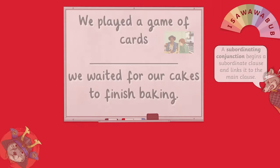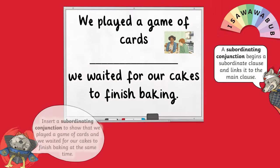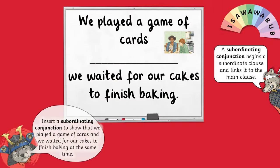For the final question, you are being asked to insert a subordinating conjunction to show that we played a game of cards and we waited for our cakes to finish baking at the same time. You might want to write your sentence down on a piece of paper or a whiteboard, or you might just want to say it out loud. Pause the video now and hit play when you have an answer.